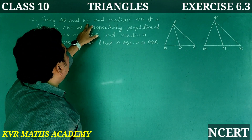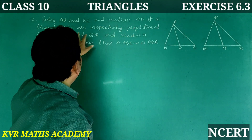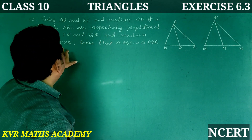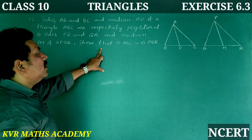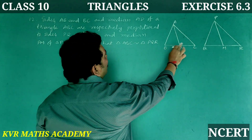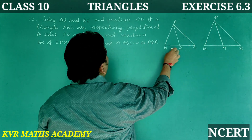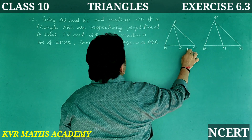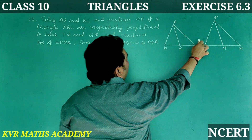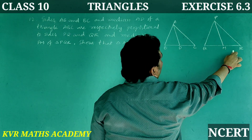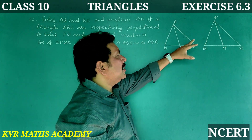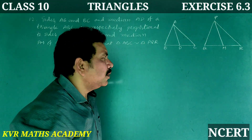Twelfth problem: Sides AB and BC and median AD of triangle ABC are respectively proportional to sides PQ and QR and median PM of triangle PQR. Show that triangle ABC is similar to triangle PQR.